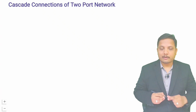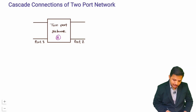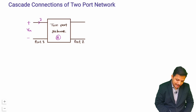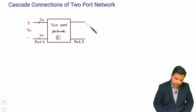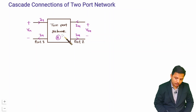Let me draw one two-port network first. Consider this is two-port network A. At port 1 of two-port network A we have voltage V1A, current going inside is I1A and current coming out is I1A. At port 2 we have voltage V2A, current going inside is I2A and current coming out is I2A.